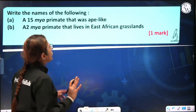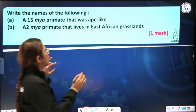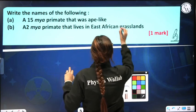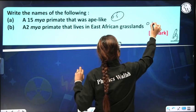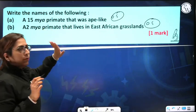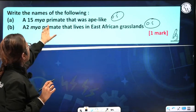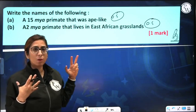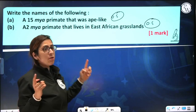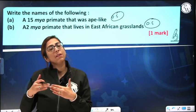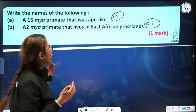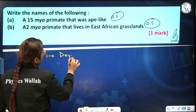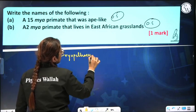Write the name of the following — this is again a one-mark question with two parts of 0.5 marks each. At 15 million years ago, which primate was ape-like? There were two: Ramapithecus and Dryopithecus. Dryopithecus were more ape-like, and Ramapithecus were more human-like. So the correct answer for the first part is Dryopithecus.